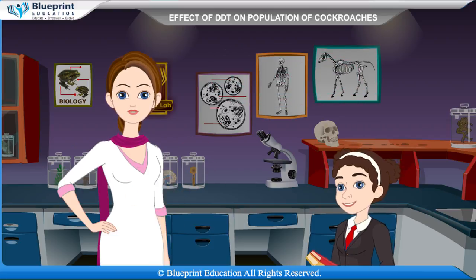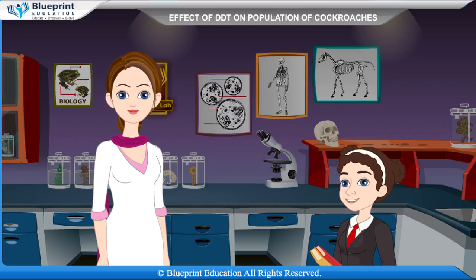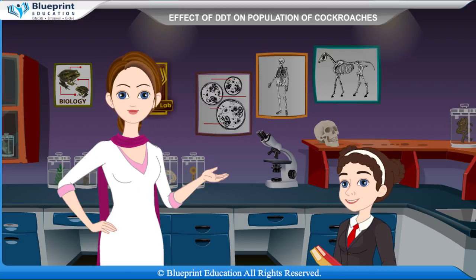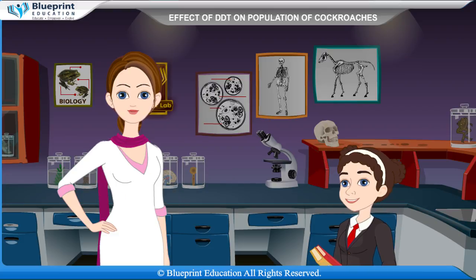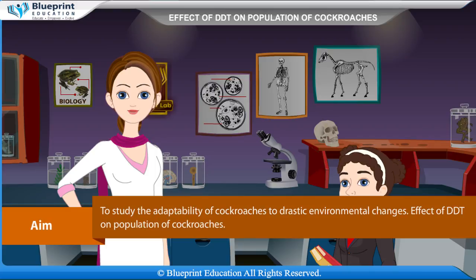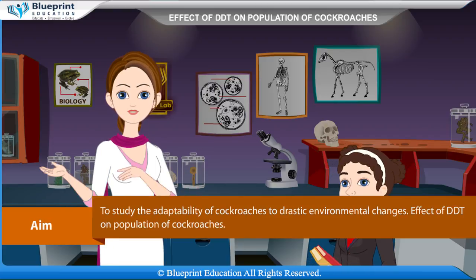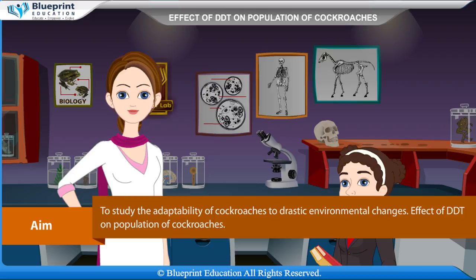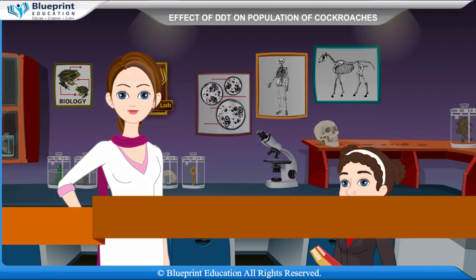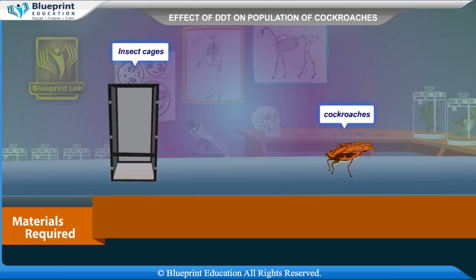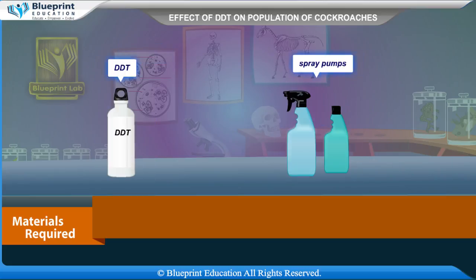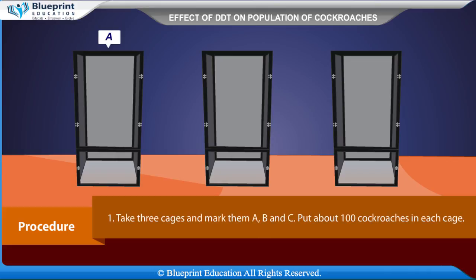Let's do an experiment to study the adaptability of cockroaches to drastic environmental changes — specifically the effect of DDT on a population of cockroaches. Our aim is to study this adaptability. Materials required are insect cages, cockroaches, DDT, and spray pumps.